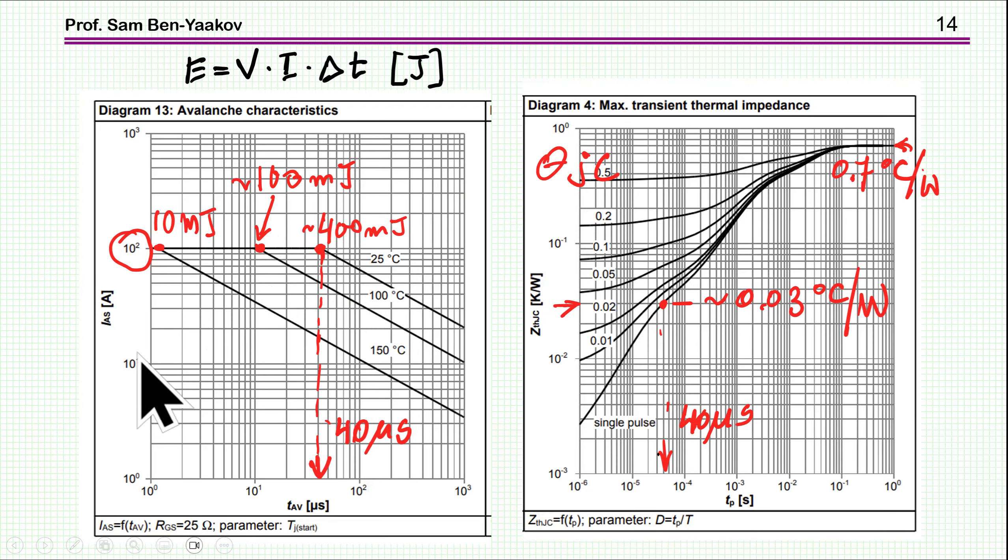Infineon is giving this information for avalanche in a different way, as a function of temperature. They are showing an absolute limit of 100 amp peak. For 25 degree, the pulse could be T2 like 40 microseconds, this brings up to 400 millijoule. And 100 degree centigrade for case before the pulse is coming in is limited to 100 millijoule, and if the case is 150, it's even lower.